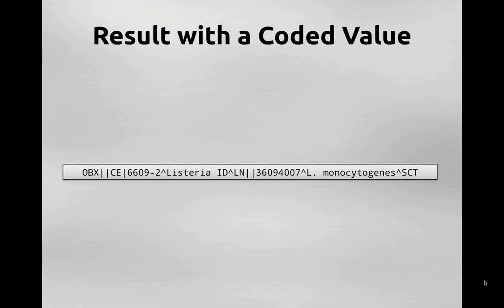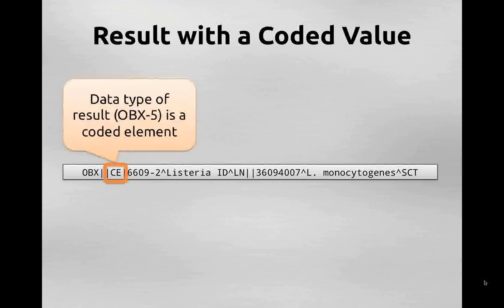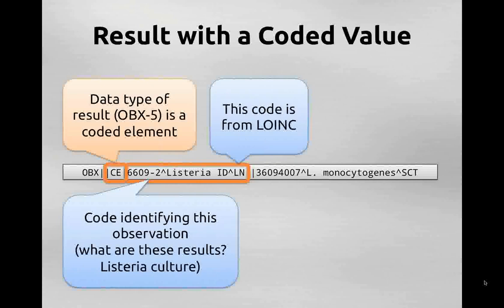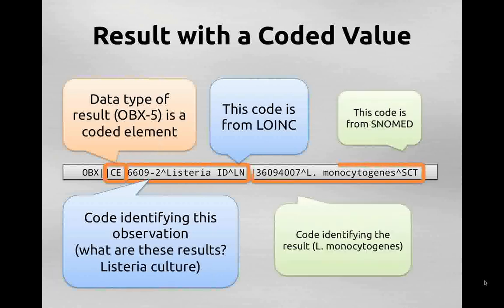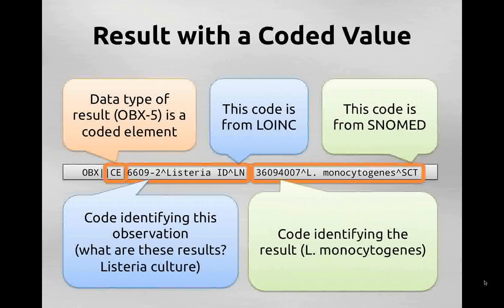This works equally well for communicating things whose answers are coded values. In an OBX segment with a coded element data type, the observation identifier in OBX3 comes from LOINC — for example, a Listeria culture. Over in OBX5 you see the answer paired as a SNOMED code that identifies the particular organism. The simplest explanation of how LOINC, SNOMED, and HL7 fit together is: LOINC represents the question and SNOMED fills the answer slot.